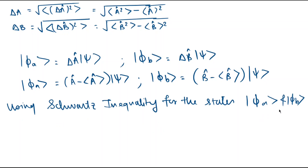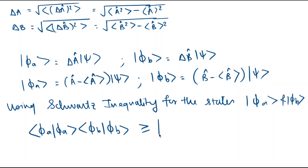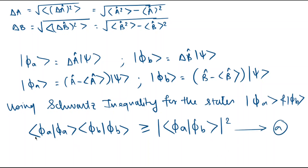Now using the Cauchy-Schwarz inequality for states phi-a and phi-b, we can say that bra-phi-a ket-phi-a times bra-phi-b ket-phi-b is greater than or equal to the modulus squared of bra-phi-a ket-phi-b. Let's call this equation A, as we are going to use it further.